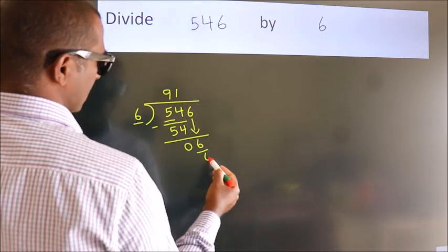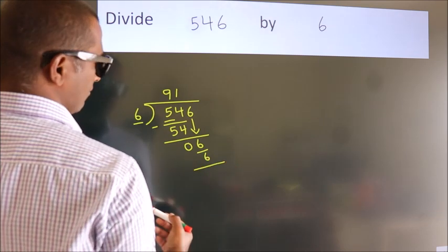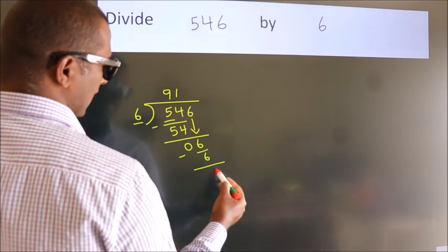6 ones equal 6. Now we subtract. We get 0.